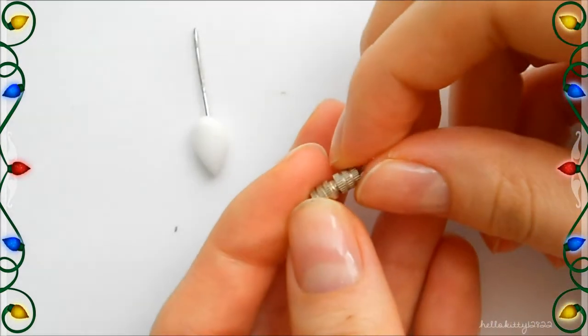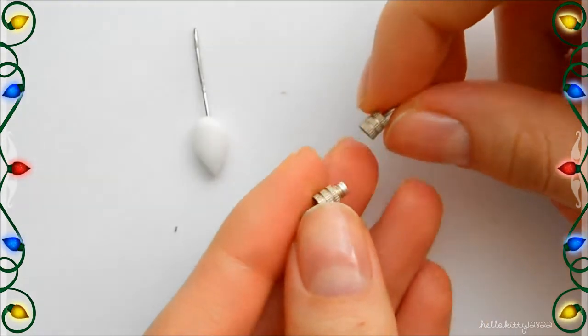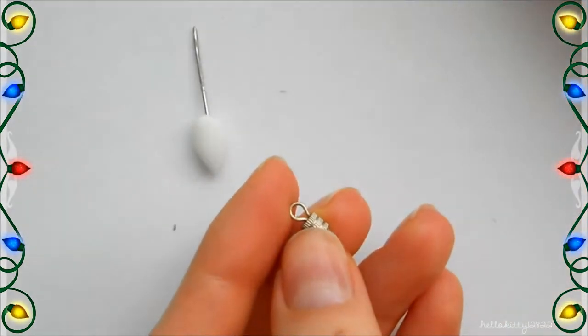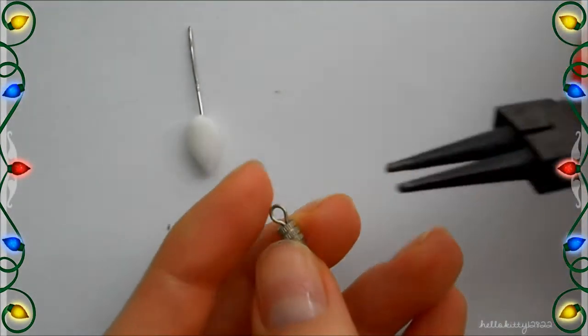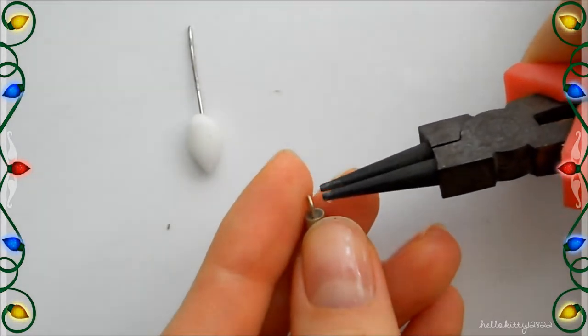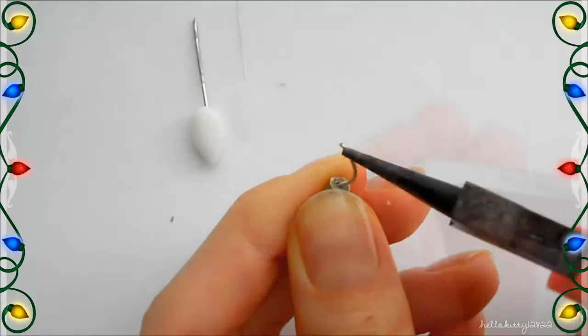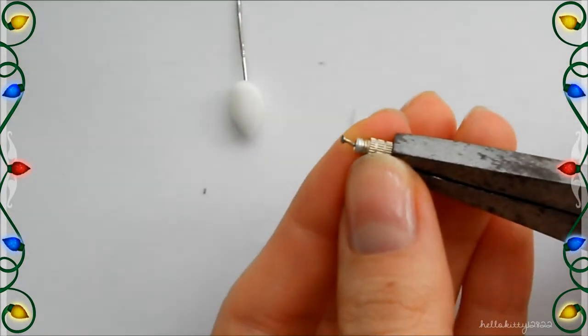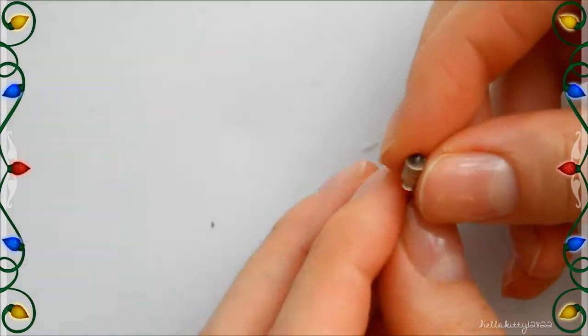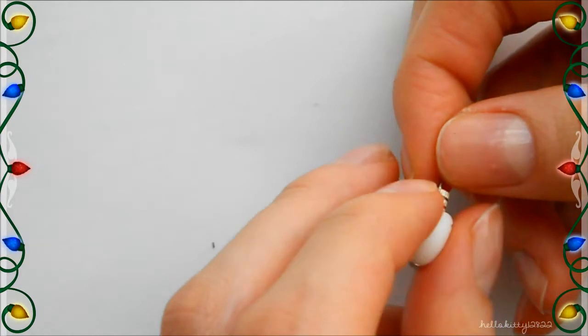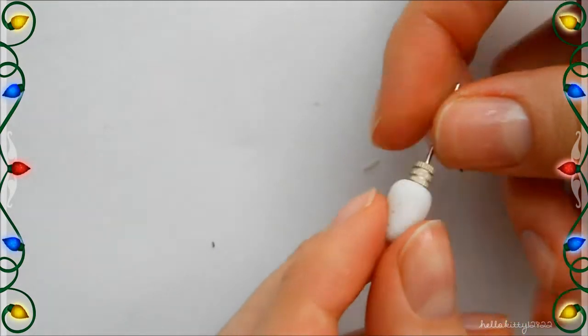Then I took barrel clasps and took my pliers to undo the loop that was at the top. And I pushed that wire through because I wanted that hole so that I can slide it through the head pin. And instead of these clasps, you can also use beads or really anything else that you want. You can also use clay. I used beads later on for my bracelet.